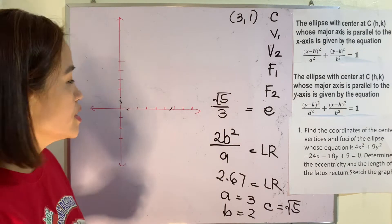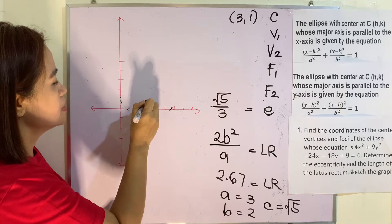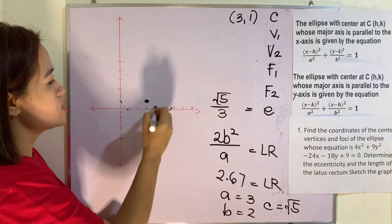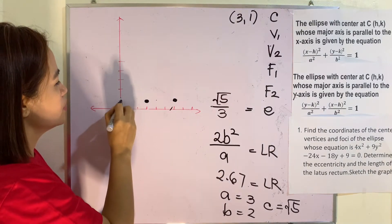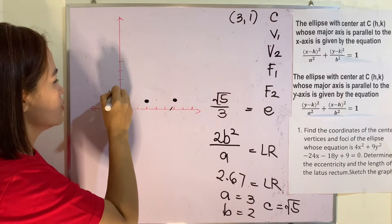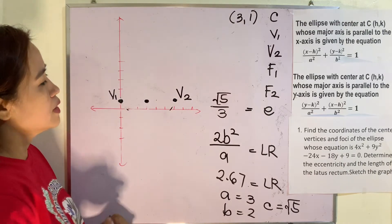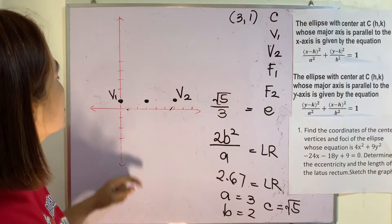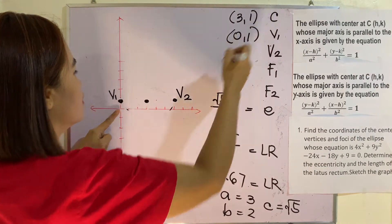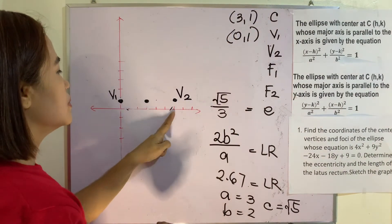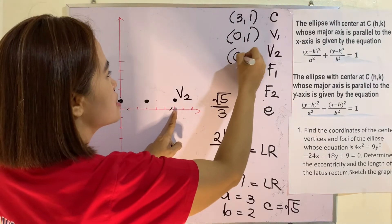Our center is at (3, 1). Our a is 3, so counting 3 units left and right from the center along the major axis, vertex 1 is at (0, 1) and vertex 2 is at (6, 1).